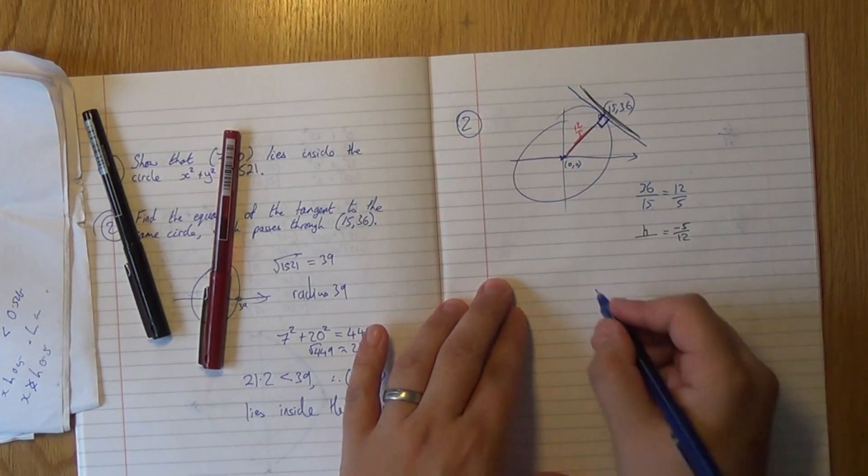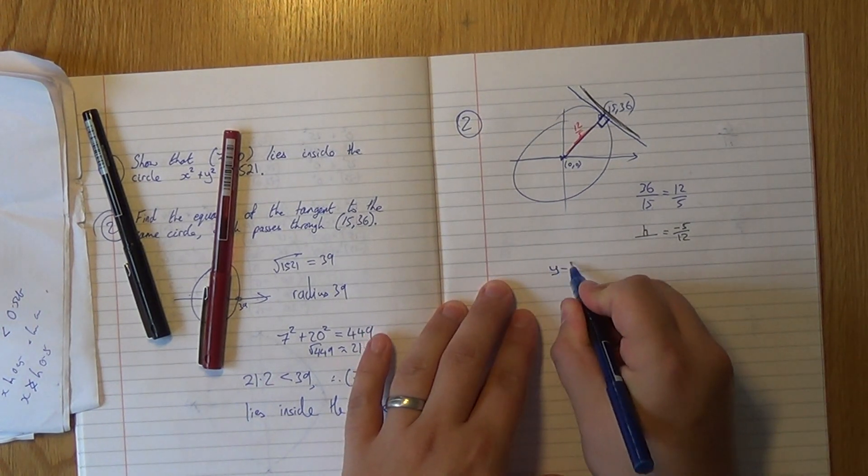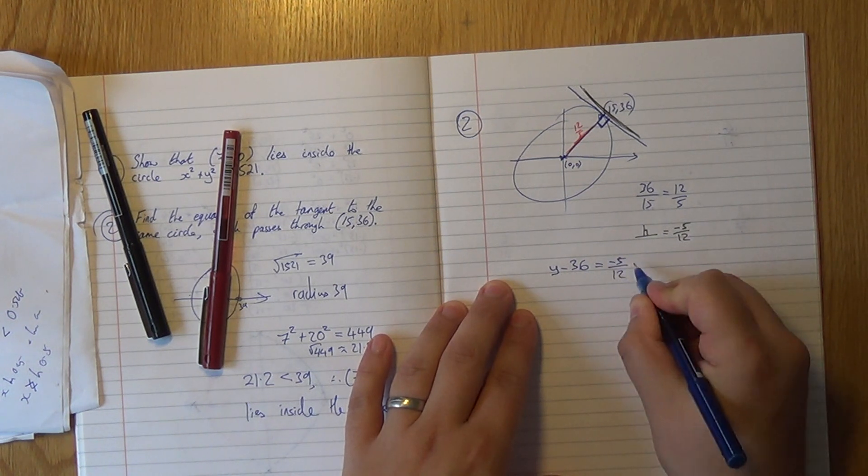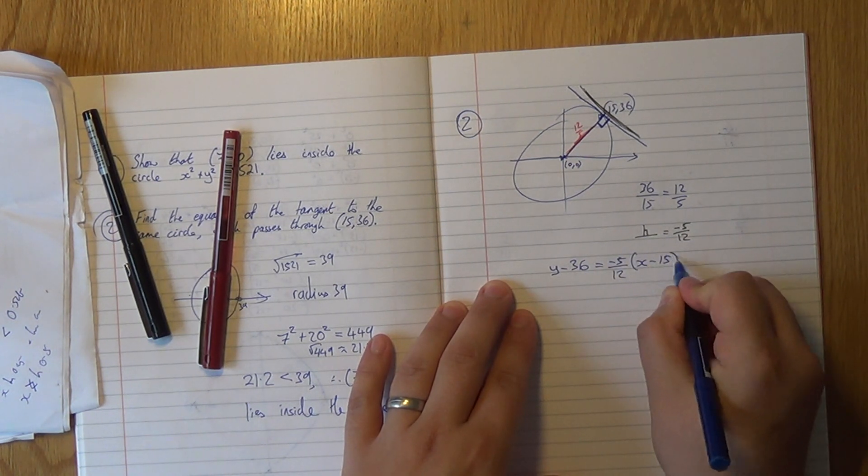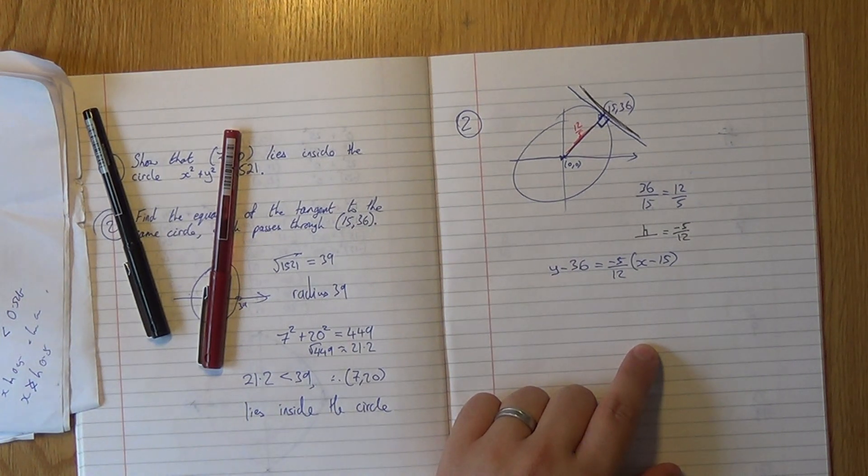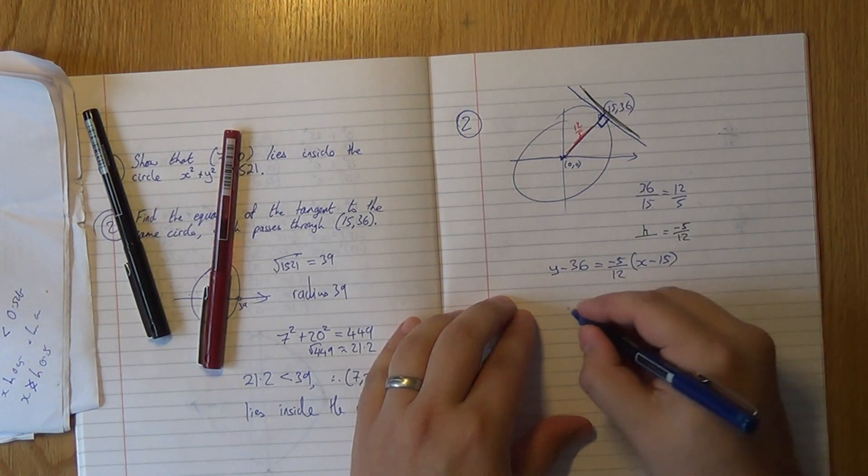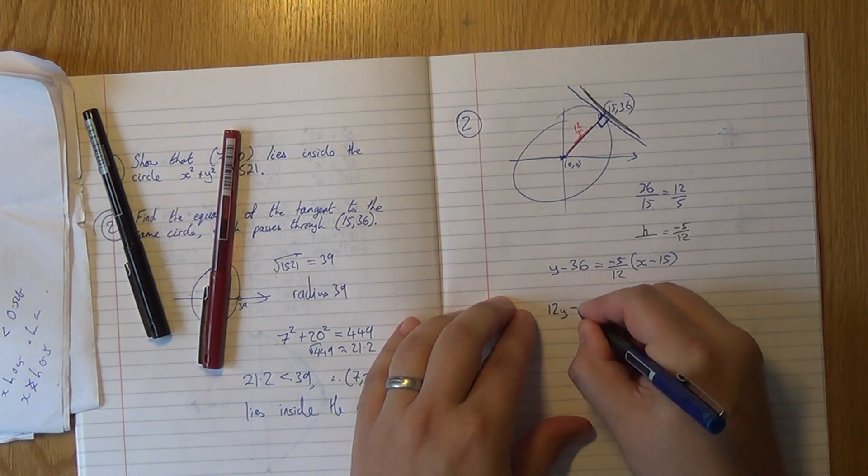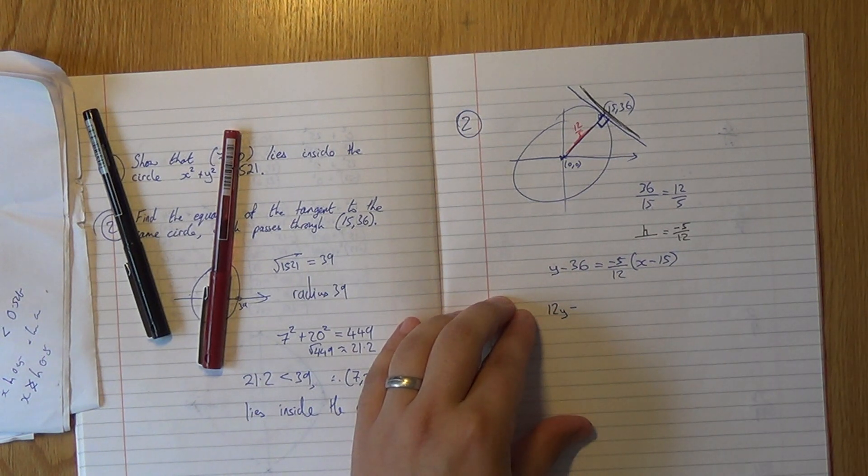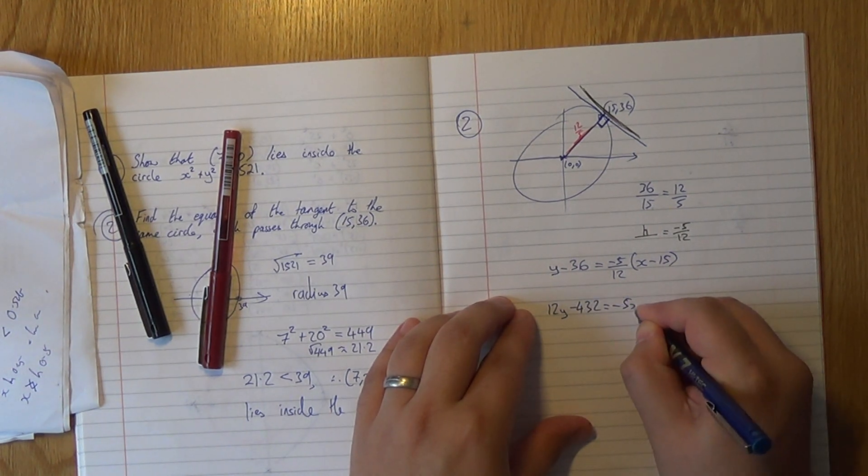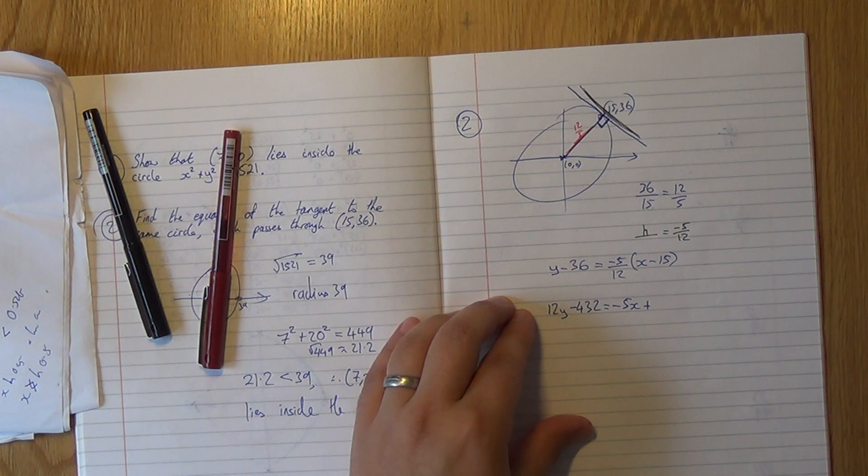So now we just write down the equation of the line. So that's y - 36 = -5/12 of (x - 15). Now that's a pretty horrible looking equation, but it is the correct equation. We shall now simplify this. So we're going to get 12y - 432 = -5x + 75.